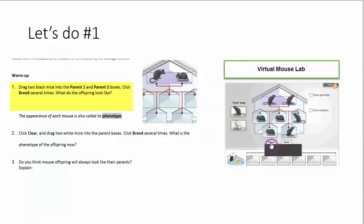Let's do number one. Number one tells us to put two black mice and breed them. As we bred them several times, look to see what our offspring looked like. Write down your answer on number one.